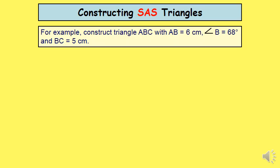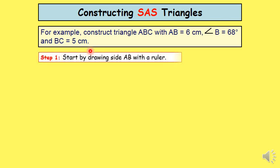Let's take an accurate example. For example, construct triangle ABC with side AB equal to 6 cm, angle B 68 degrees, and BC equal to 5 cm. We start step number 1 by the side AB with the ruler which measures 6 cm.